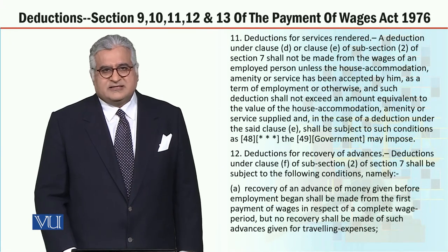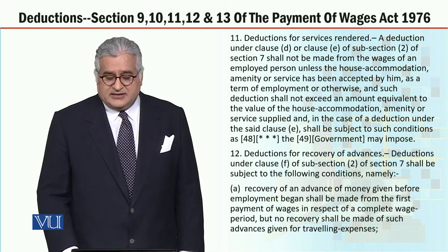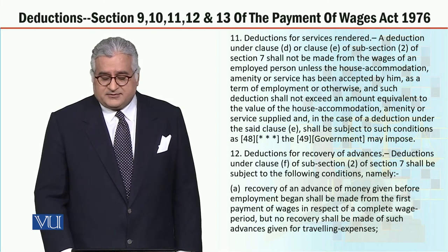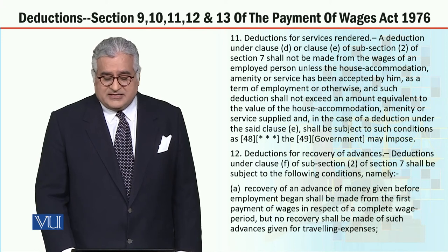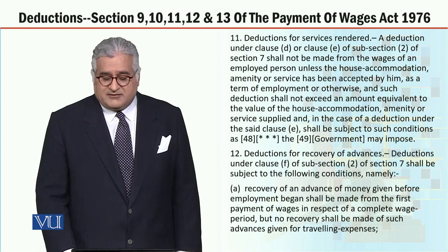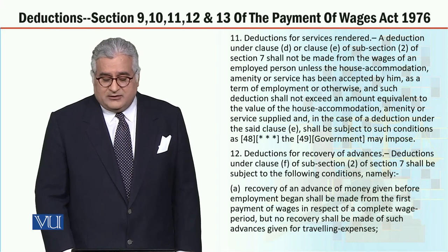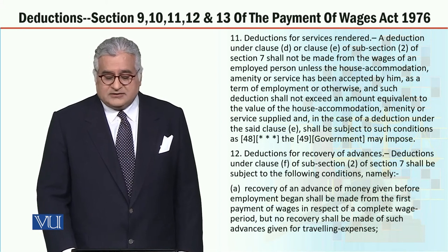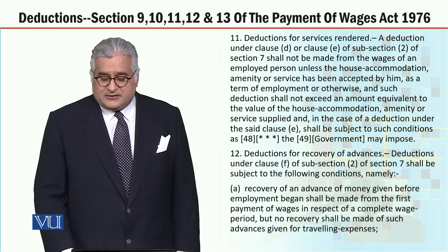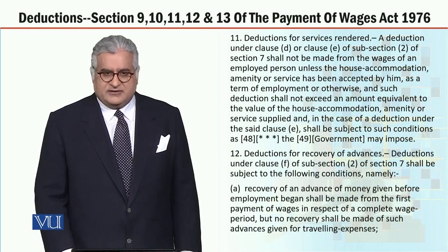Deductions for services rendered. A deduction under clause D or clause E of subsection 2 of section 7 shall not be made from the wages of an employed person unless the house accommodation, amenity or service has been accepted by him as a term of employment or otherwise. Such deduction shall not exceed an amount equivalent to the value of the house accommodation, amenity or service supplied. In the case of a deduction under clause E, it shall be subject to such conditions as the government may impose.